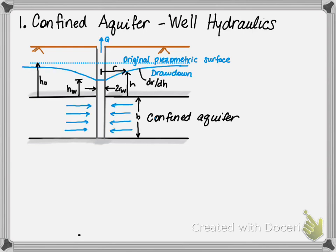As flow is pumped through the well, Q, and out of the confined aquifer, a drawdown occurs of DR, DH.